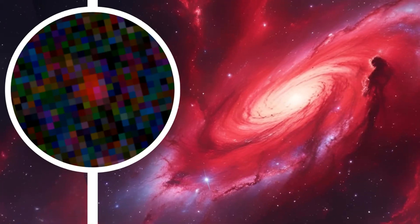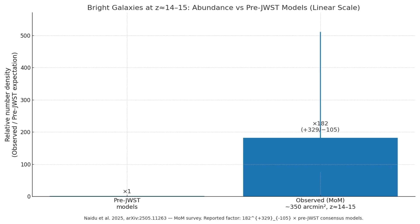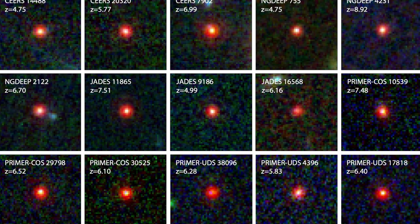MOEM Z14 isn't just a one-off. The Mirage or Miracle Survey over approximately 350 arc minutes squared implies that bright galaxies at Z approximately equal to 14 to 15 are more than 100 times as common as pre-JWST models predicted. That's a huge nudge for our simulations of how fast the first stars and galaxies ignited.